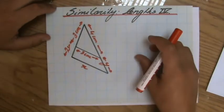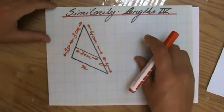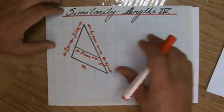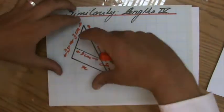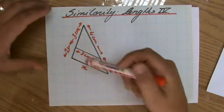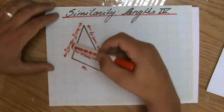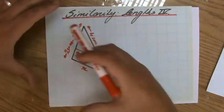So check my site explainingmaths.com where you will find all these videos nicely organized for yourself. Okay, but now this question, it's a very typical question involving similarity where you have actually only one triangle as it appears, but there is like a triangle inside as well and all these lengths.